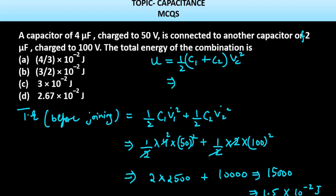Now we have to place our value in this. Half as it is, C1 plus C2, which is 4 plus 2, into V_c square is 100. You have to find the final answer, 1.33 into 10 raised to the power minus 2 joules.